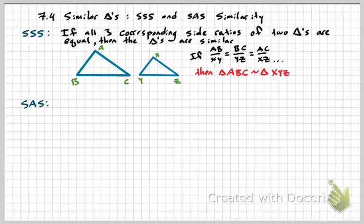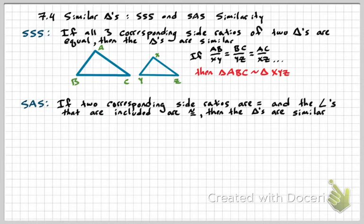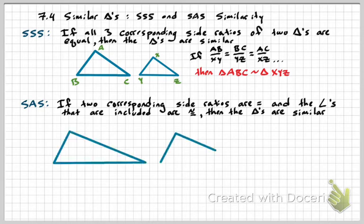And then SAS — remember that was also a congruent triangle shortcut — but the angle has to be included, right? It's between the two sides you know. So if two corresponding ratios are equal and the angles that are included are congruent, then the triangles are similar. The big thing to remember for SAS is the angle has to be between the sides that you know for each triangle, and the corresponding ratios still have to be equal.